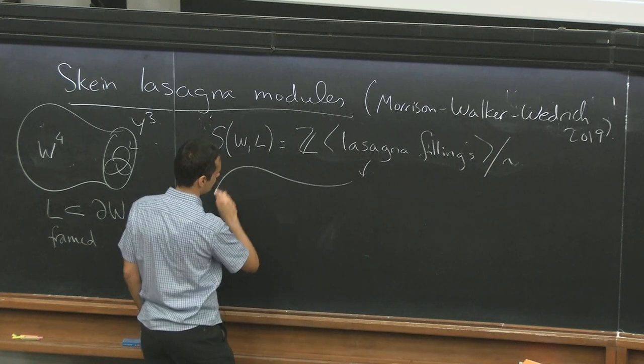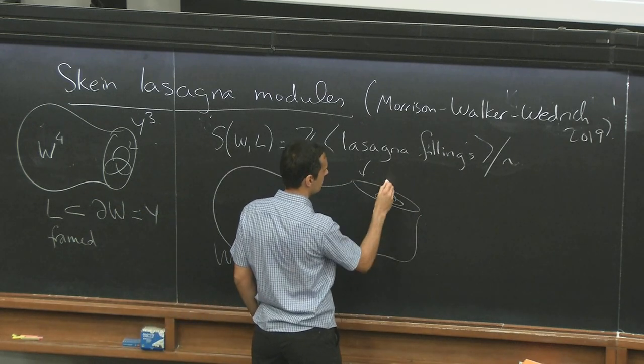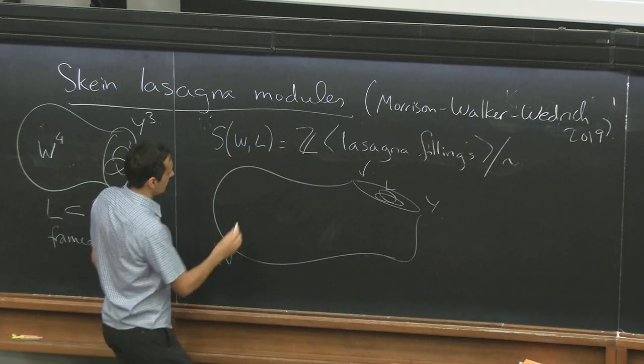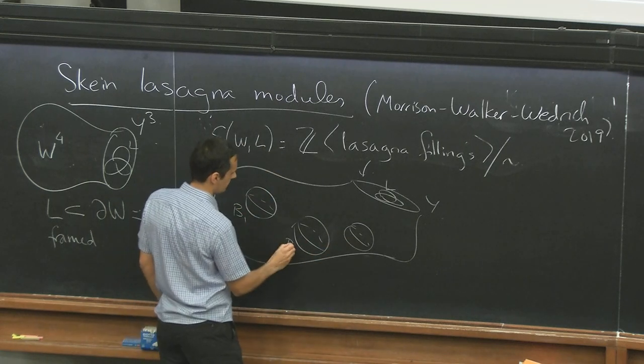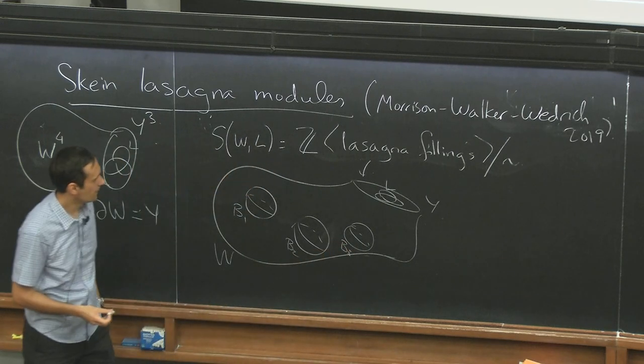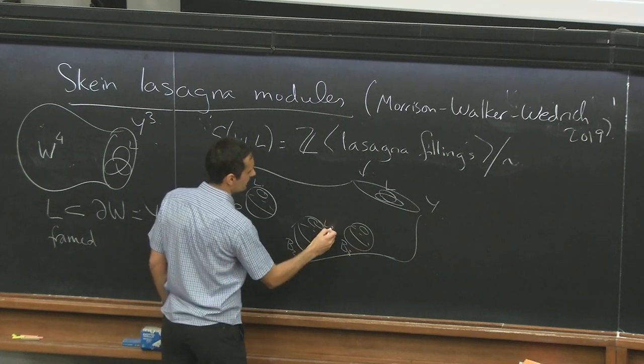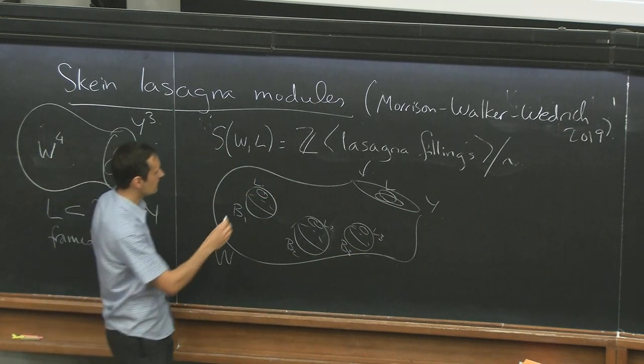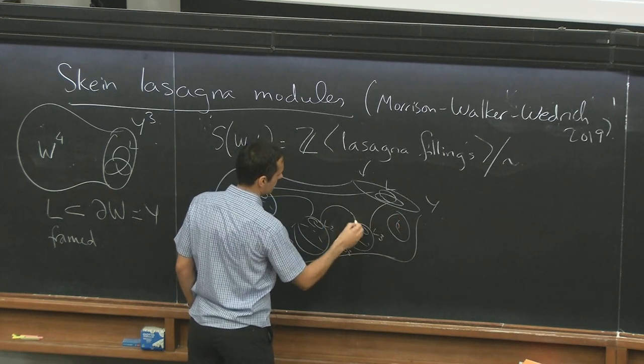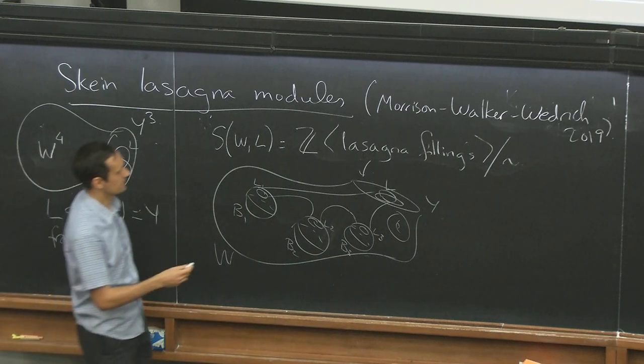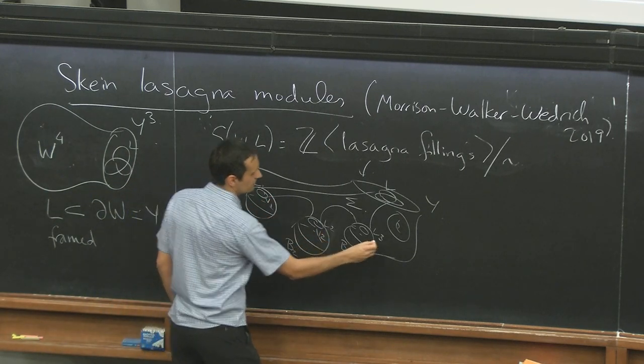Well, let me draw one. So, this is W, this is the link, this is Y. You have some interior balls here, B1, B2, B3. So, these are four-dimensional balls. You have some links on their boundaries, L1, L2, L3, and so on. And you have some cobordism from these links to L, other components. This is a surface. And you also have some elements, V1, V2, V3.